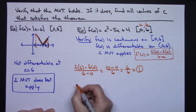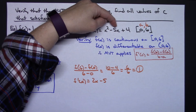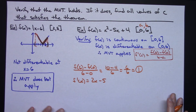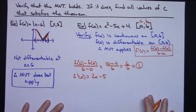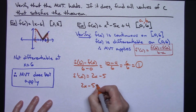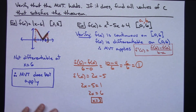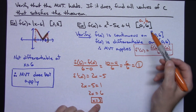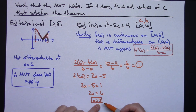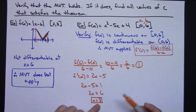Now let's take this function and calculate its derivative. F prime of x is going to be 2x minus 5 — a pretty straightforward derivative. Now I'll take these two things, set the derivative equal to the average rate of change, and solve: 2x minus 5 equals 1, so 2x equals 6, and x equals 3. So I've definitely found my value of c.